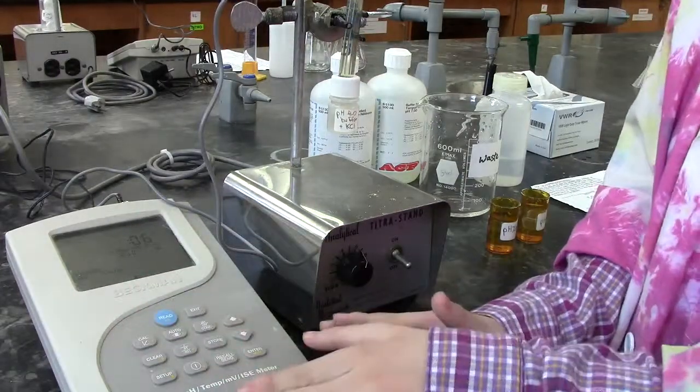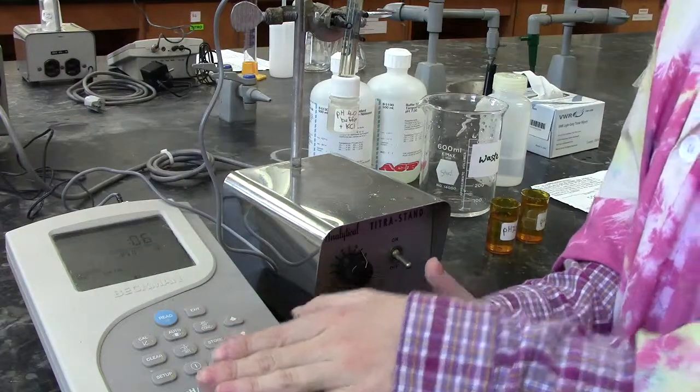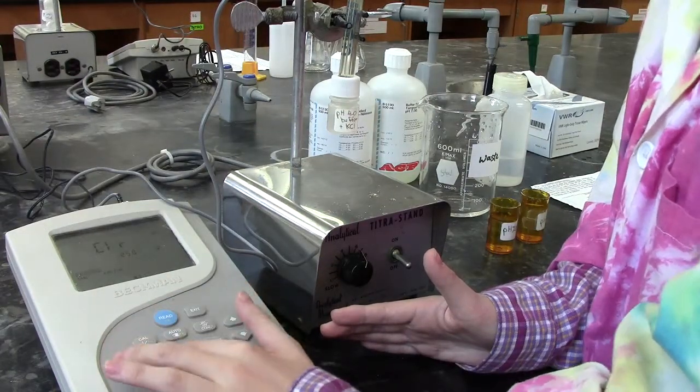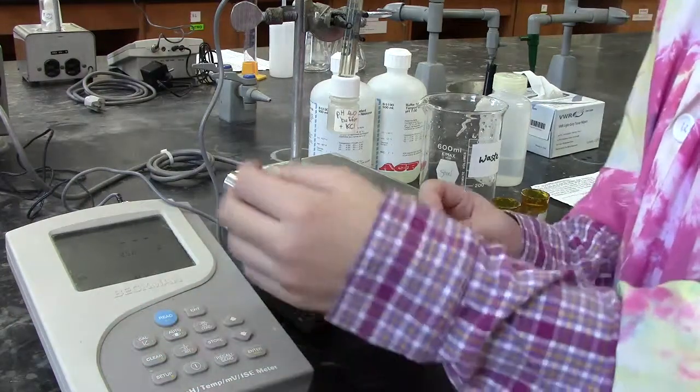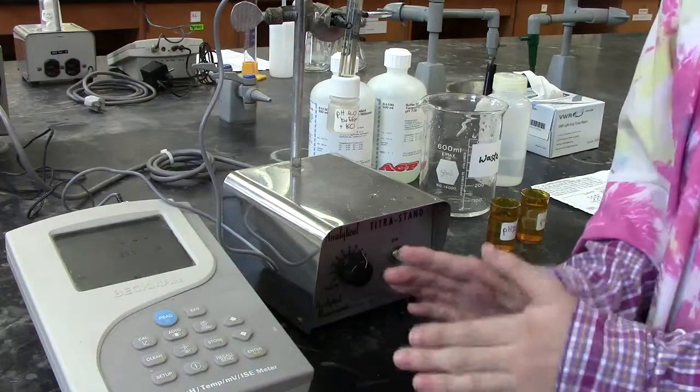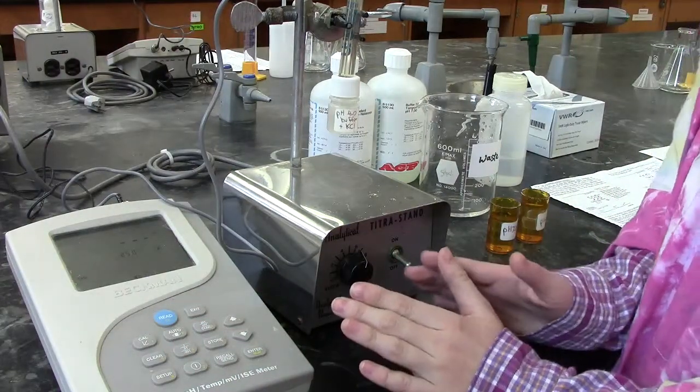We must first erase the previously calibrated standards by pressing clear. Clear needs to be pressed twice for the standards to be completely cleared. At this point, we are now ready to calibrate our pH meter ourselves.